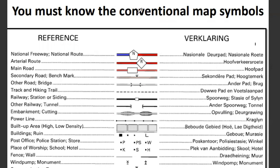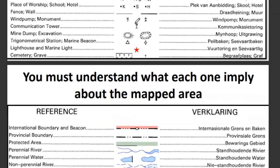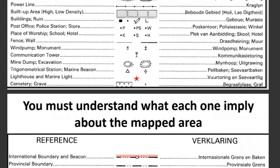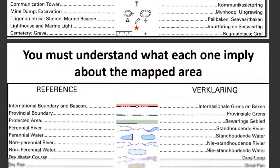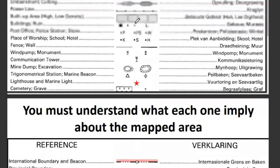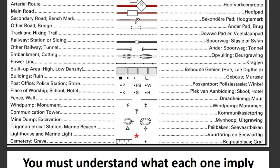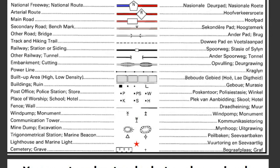When you are given a map extract, understand that the map will have what we call a reference. The reference is the key you use to interpret what is on the map. One side is in Afrikaans and the other side is in English, so you can use whichever side you understand. Some learners are struggling to understand what the key or reference refers to.